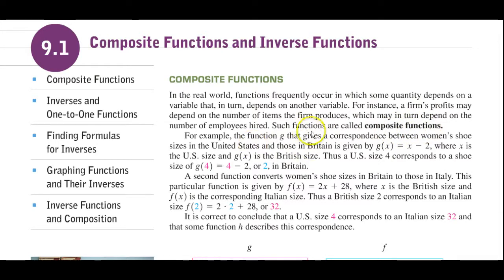An example is given in which a woman's shoe size in the United States and those in Britain are given by g(x) = x - 2, where x is the U.S. shoe size and the function value is the British size. Thus, the U.S. size 4 corresponds to a shoe size in Britain of 2.